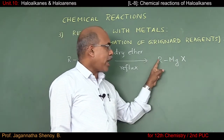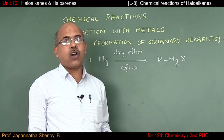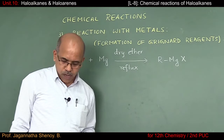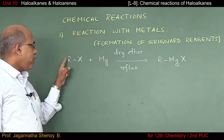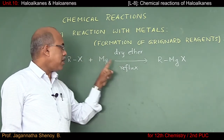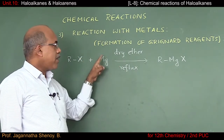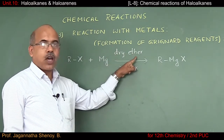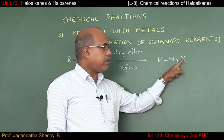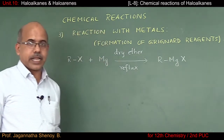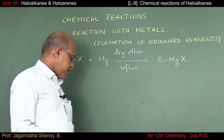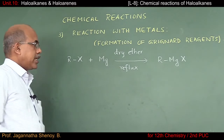These organomagnesium halides are called Grignard reagents. When an alkyl halide or aryl halide is refluxed with magnesium ribbon in the presence of dry and alcohol-free ether, we get organomagnesium halide, which are called Grignard reagents. Now let us study the polarity of the Grignard reagent.